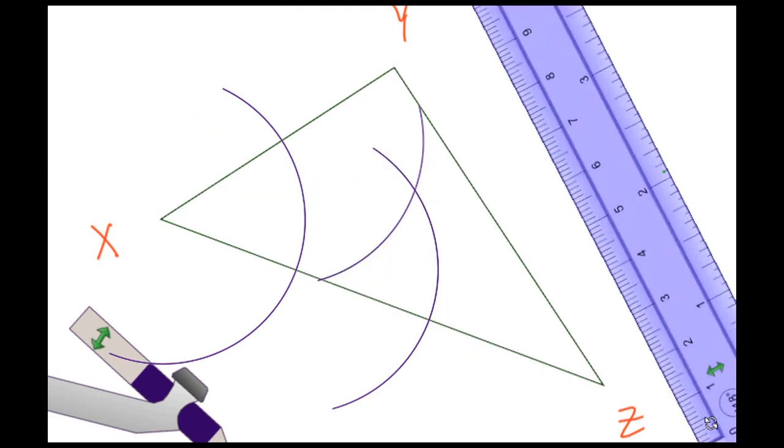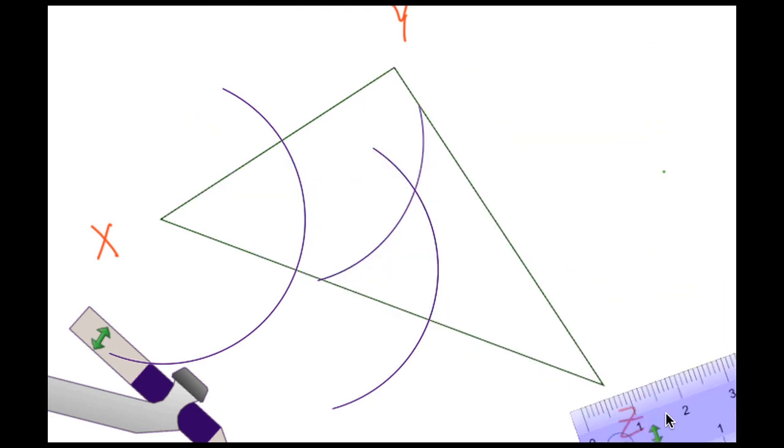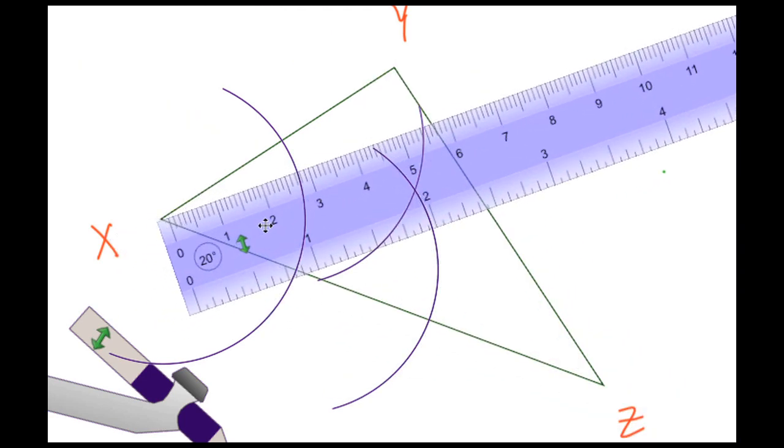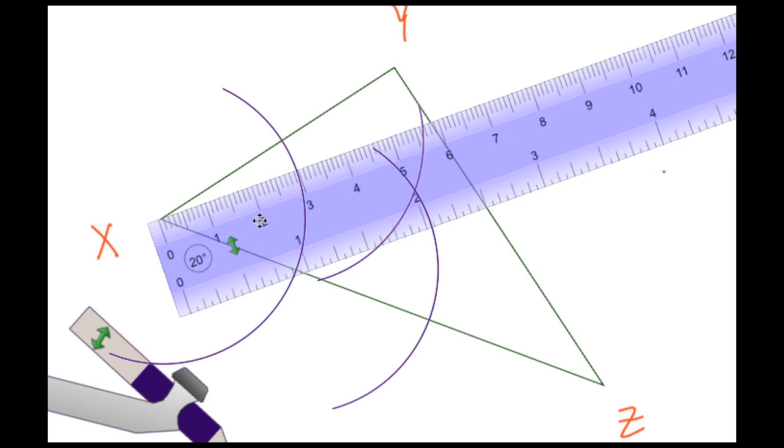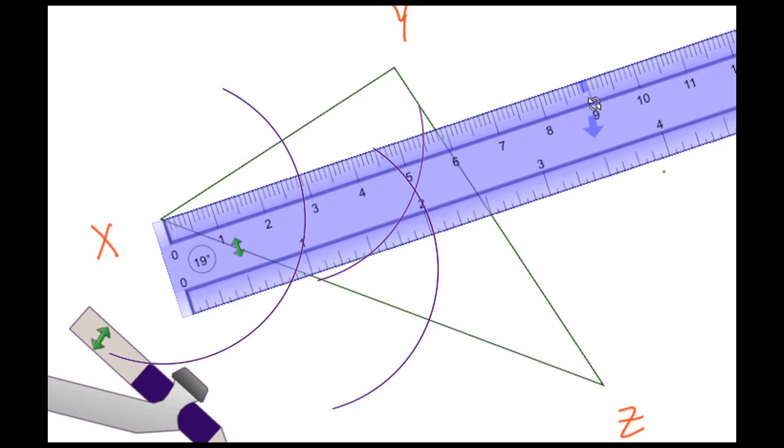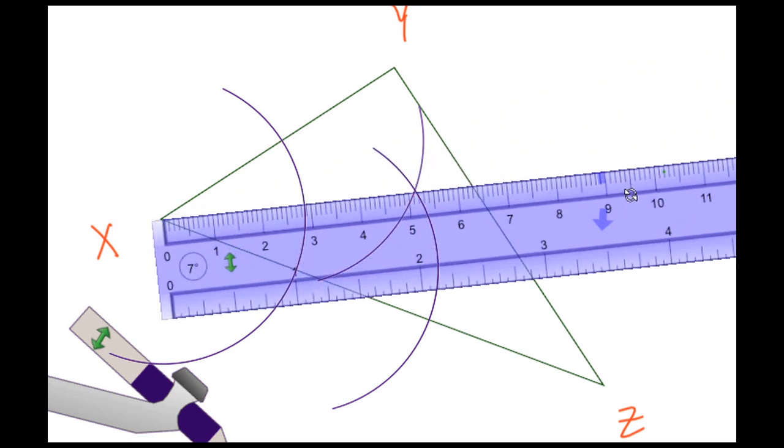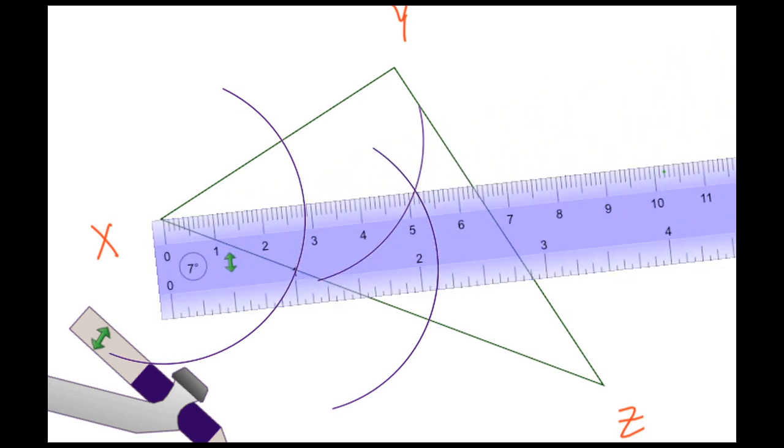We're going to draw another arc, paying attention to where those last two arcs intersect. Once we do that, we're going to put the ruler in place because now we want to draw a line which is going to be the actual angle bisector. It's going to extend from angle X to and through where these two arcs intersect. Let's draw that here.